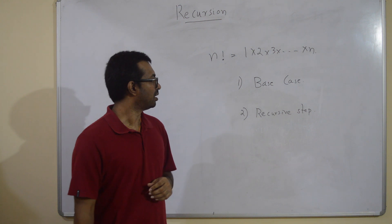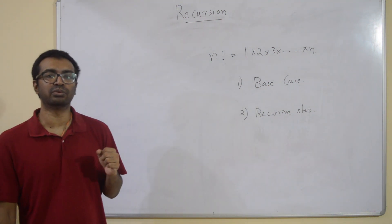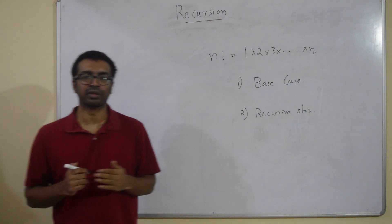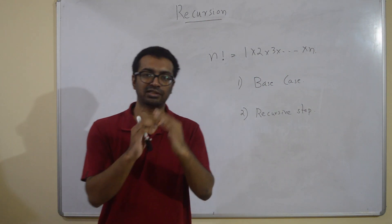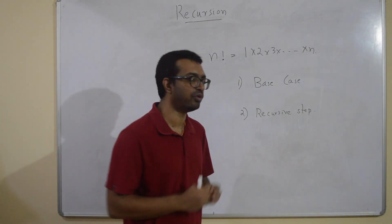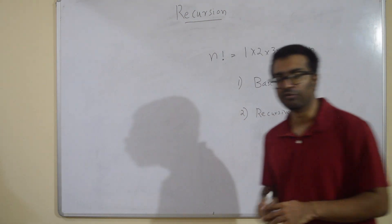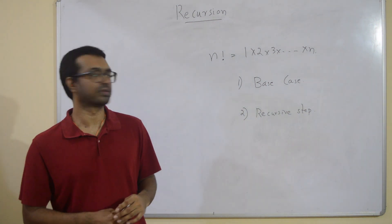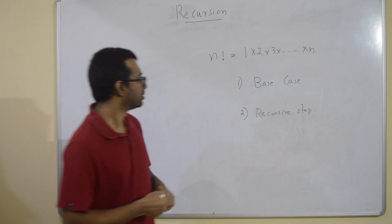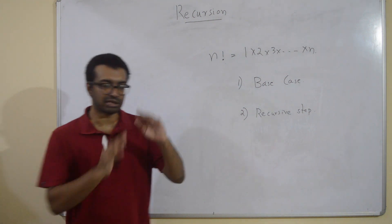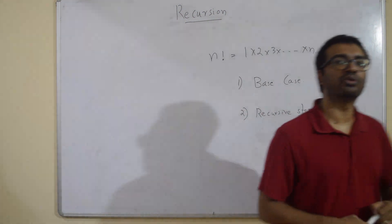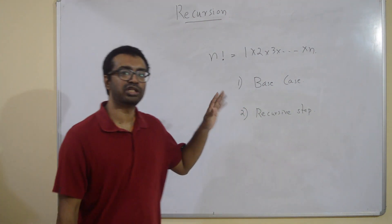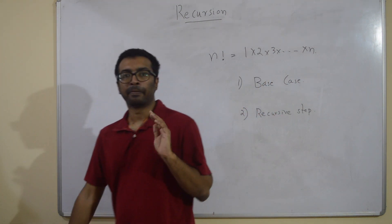What is the base case? The base case tells you what the output should be when the input is in its simplest form — the easiest input for which we know for sure what the answer is. The recursive step is the block of code where you call the function recursively again.